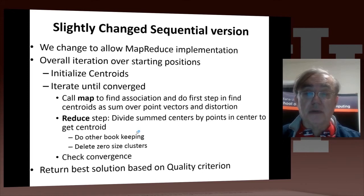So we have this sequential program which is now modified. This MapReduce is actually going to run sequentially. It's just structured as Map followed by Reduce, and it could be implemented in parallel. We have this overall iteration over starting positions. Remember that had 1 through 20 in the examples we gave. We initialize the centroids to random points in the initial data set. Then we iterate until convergence.